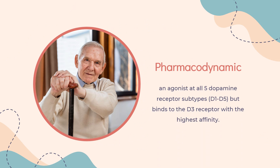Pharmacodynamics: Rotigotine is an agonist at all five dopamine receptor subtypes, D1 through D5, but binds to the D3 receptor with the highest affinity. It is also an antagonist at alpha-2 adrenergic receptors and an agonist at the 5-HT1A receptors. Rotigotine also inhibits dopamine uptake and prolactin secretion.